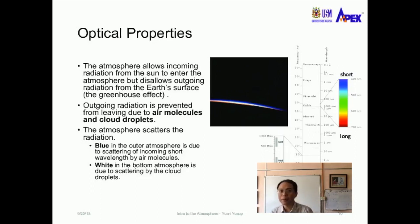First we go into the optical properties of the atmosphere. The atmosphere allows incoming radiation from the Sun to enter and reach the surface of the Earth, but it prevents the radiation from going out of the Earth's surface. This is what we call the greenhouse effect. The outgoing radiation is prevented from leaving because of the air molecules and cloud droplets that are present in the atmosphere.